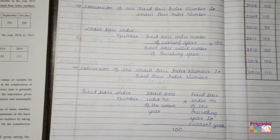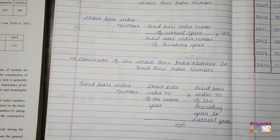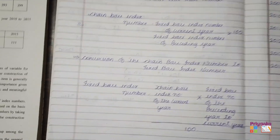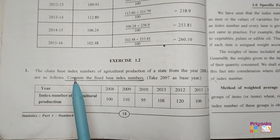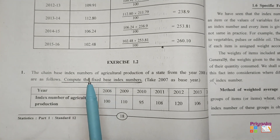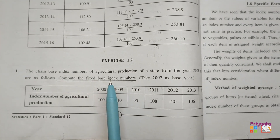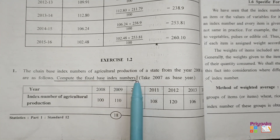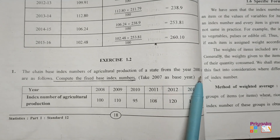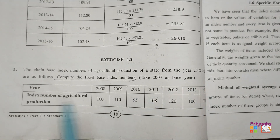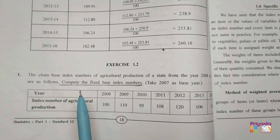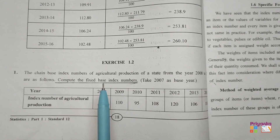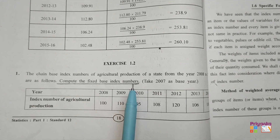You will understand this formula more when we start with the solution. Here we start with the first question: 'The chain base index numbers of agricultural production of a state from the year 2008 to 2014 are as follows. Compute the fixed base index number.'